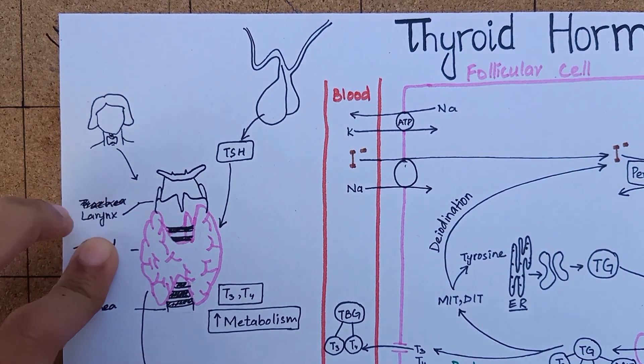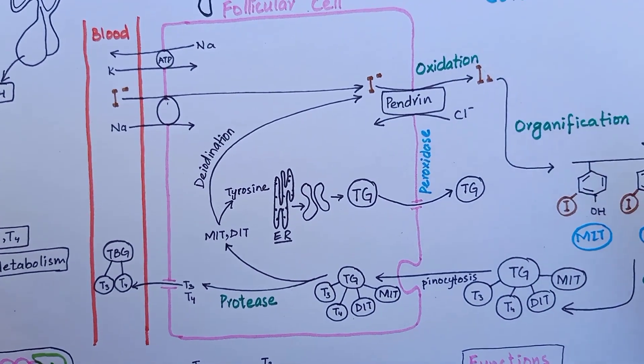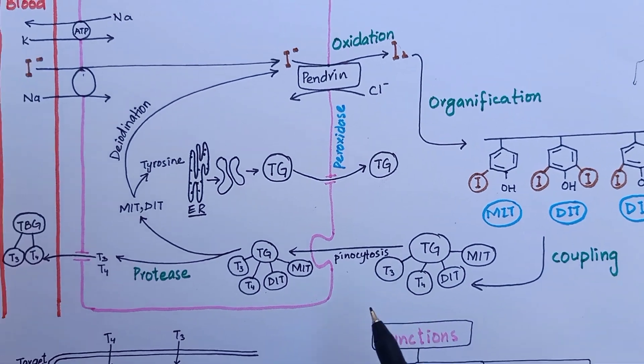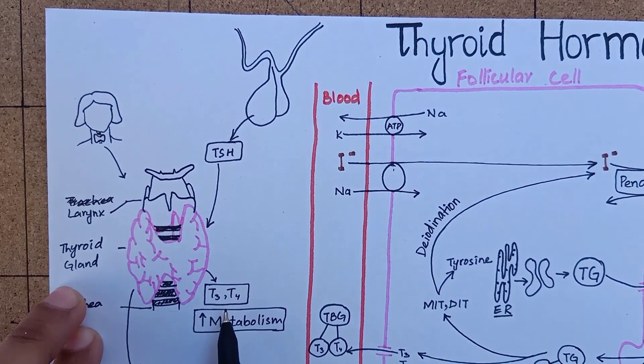TSH has the following effects on thyroid gland: It increases the activity of iodine pump. It increases the process of oxidation and iodination. It increases the protease activity, releasing metabolically active T3 and T4 into circulation.